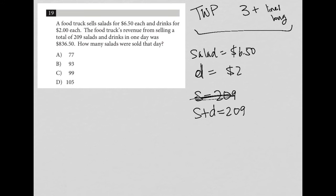Well, what does that mean? That means that for every salad that you pay $6.50 for, so that's 6.50 times the number of salads plus $2 times the number of drinks ended up with a revenue total of $836.50. So here I am translating everything that I read. How many salads were sold that day? So S question mark is what I'm trying to find.